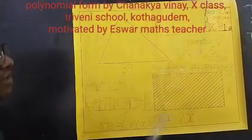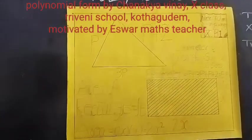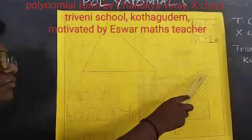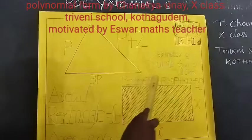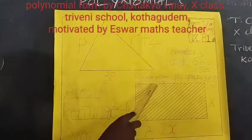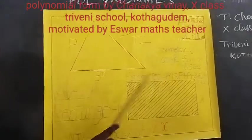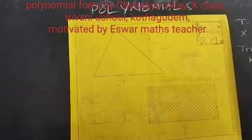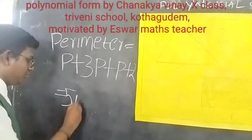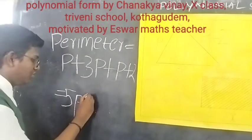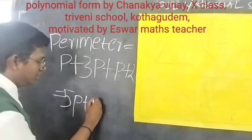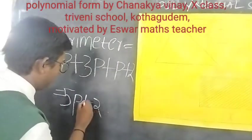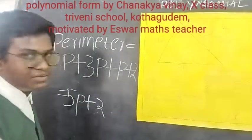The perimeter of the triangle is the sum of all sides.